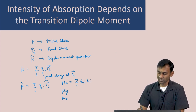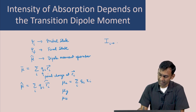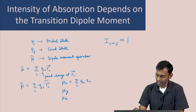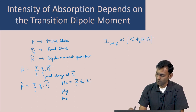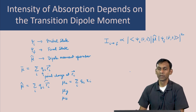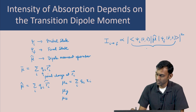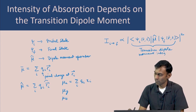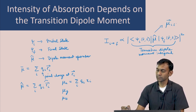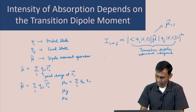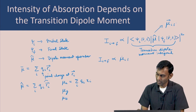The intensity of a transition from state i to state f is proportional to the square of the following integral: ⟨ψ_i(r,t) | μ̂ | ψ_f(r,t)⟩, magnitude squared. This integral is called the transition dipole moment integral, and it is usually denoted by μ_if. In other words, the intensity of the transition from i to f is proportional to |μ_if|².